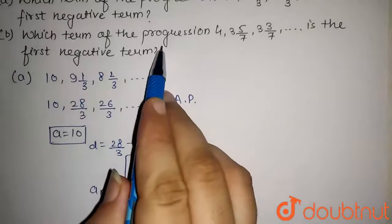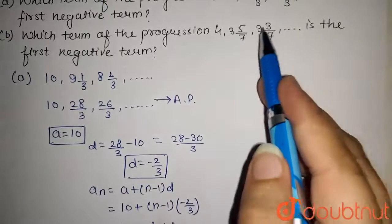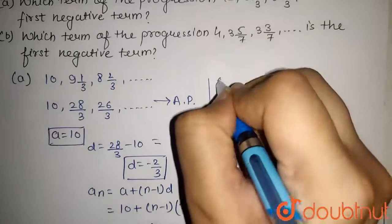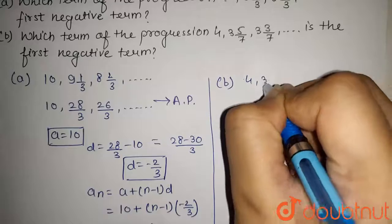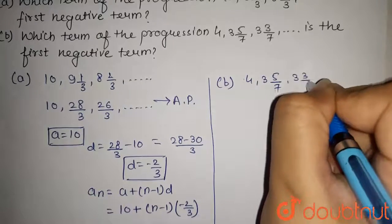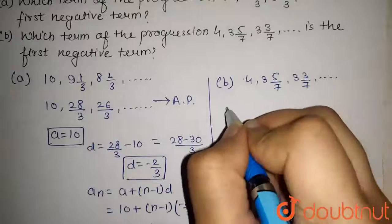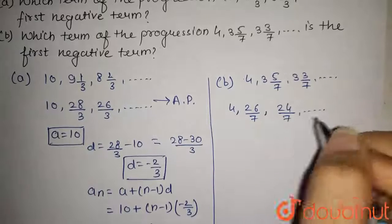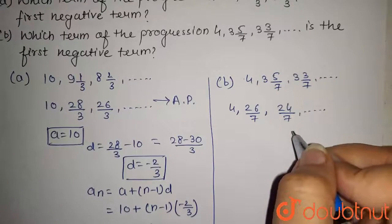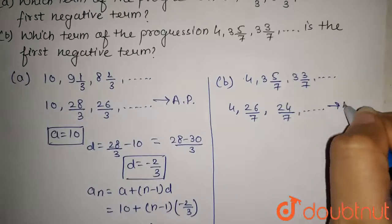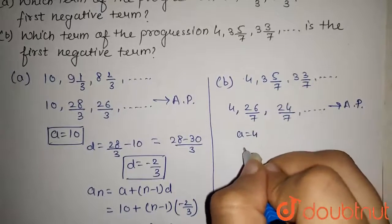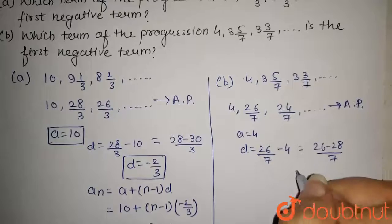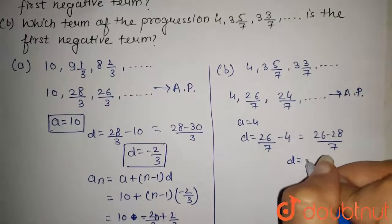The second part asks: which term of the progression 4, 3⁵⁄₇, 3³⁄₇ and so on is the first negative term? In simple fraction form the series is 4, 26/7, 24/7 and so on. Again, the difference between consecutive terms is constant, so this is an arithmetic progression with first term 4. The common difference is 26/7 minus 4, which equals (26 − 28)/7, giving d = −2/7.